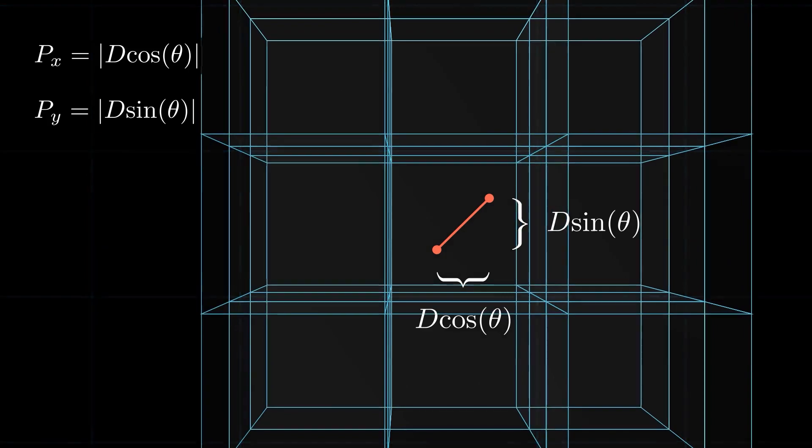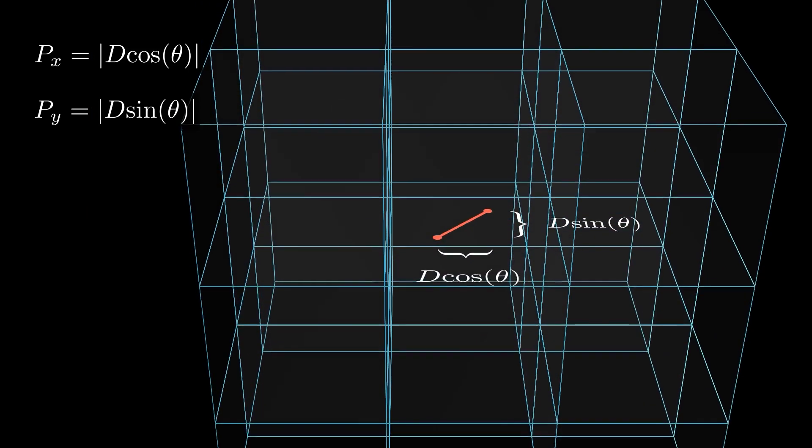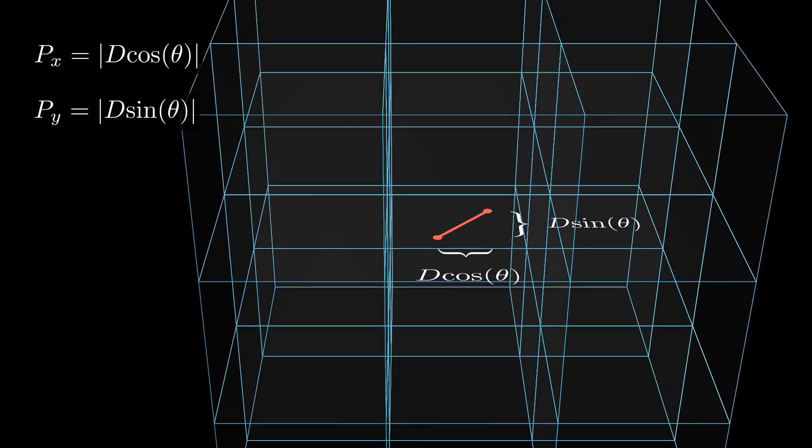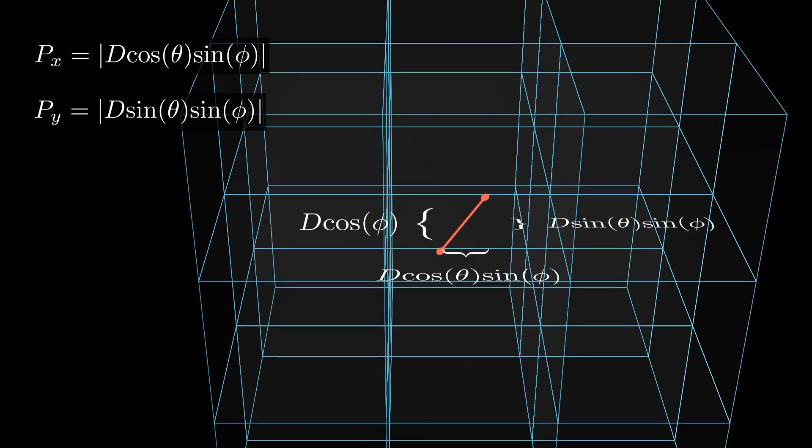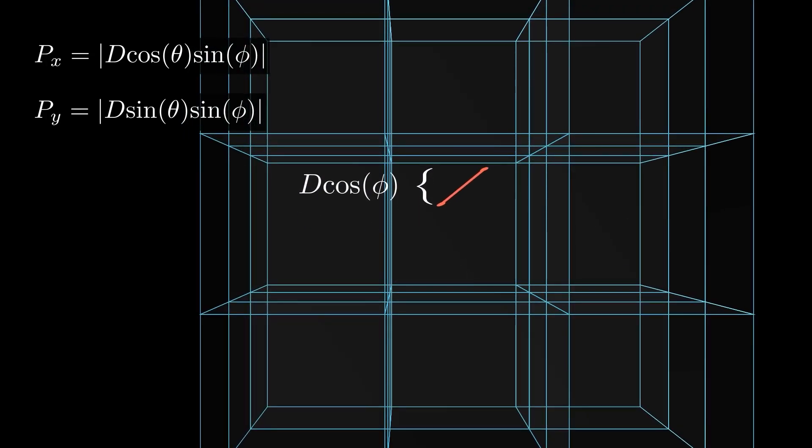We can return to the relevant case of 3D and continue with the same logic, now with an additional polar angle, phi. Still assuming that D is less than or equal to 1, the probability that we cross a plane that is constant in x or y is given by the x and y-component of the segment, respectively, each one of which has gained a factor of sine phi. The probability that we cross a plane that is constant in z is the z-component, D cosine phi.